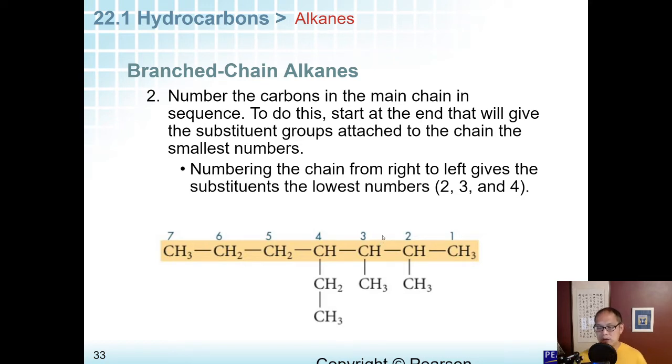Sometimes they'll be in the middle, and so you can number it either way. But as we showed in this example, it'll show you that sometimes you number from right to left. It's not always from left to right. We could have drew this the opposite way, and then we could have numbered it from left to right, but they drew it this way on purpose so that you could see that. The lowest numbers here, two, three, and four. So we've numbered the chain.